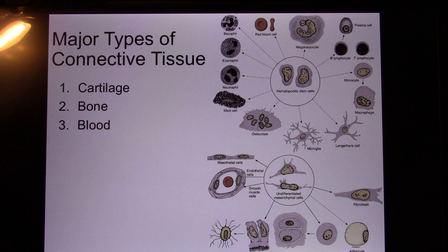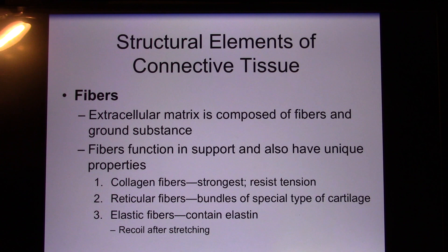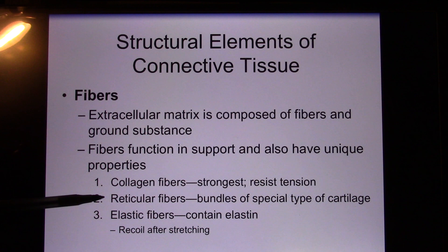Now let's look at the fiber, because fiber changes the soup. You have different kinds of fiber. There's collagen fiber — that's the strongest one. And reticular fiber — that's the most common one. And elastic fiber — that's the bendable one, like a rubber band. So changing the components changes the soup.